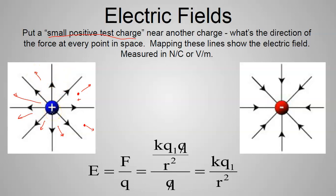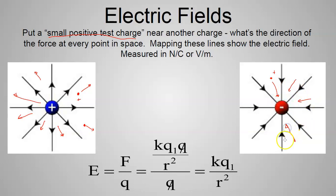If you put a positive charge somewhere, all the electric field lines point outward from it. On the other hand, if you put a negative charge and place a small positive test charge anywhere in that space, it will be attracted — pulled toward the negative charge. So all the field lines point inward. The direction depends on the sign of the charge; the magnitude depends on how close we are.